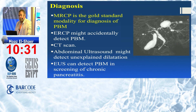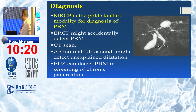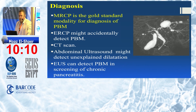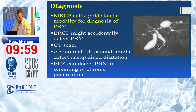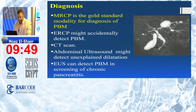How do we diagnose pancreatobiliary maljunction? MRCP is the gold standard as a non-invasive modality to clearly detect the maljunction, showing the bile duct, cystic duct, pancreatic duct, and the long common channel. ERCP might accidentally detect pancreatobiliary maljunction, as we don't usually use ERCP as a diagnostic modality, but it may be detected incidentally during cholangiography. CT scan and abdominal ultrasound may also detect unexplained dilatation of the bile duct.